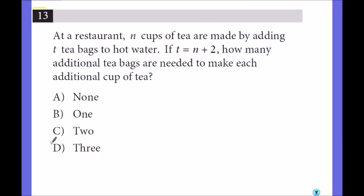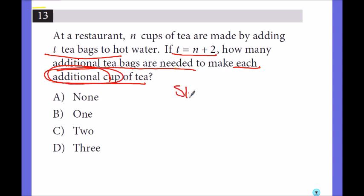At a restaurant, N cups of tea are made by adding teabags to hot water. If t equals N plus 2, how many additional teabags are needed to make each additional cup of tea? Each additional cup of tea. You need 2 more originally, but it's asking for additional cup. So that's asking for a slope. You see another question involving slope. Isn't it linear? So what's the slope? It's 1. So it is 1, not 2. I think that's a common mistake. It asks what additional teabags are needed to make each additional cup of tea. So when N increases by 1, t increases by 1 too.